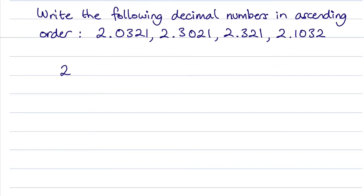So we would have 2.0321, we've got 2.3021, 2.321, and what I'd like to do here is add any zeros so we've got the same number of digits. So I've just added a zero here and it doesn't make any difference to the value of that number. And then we have 2.1032.